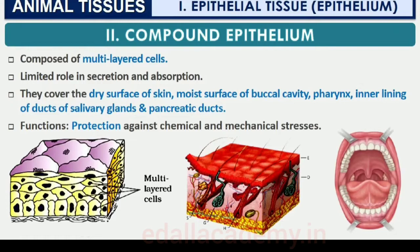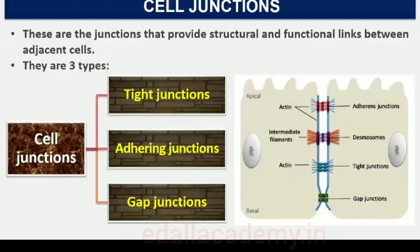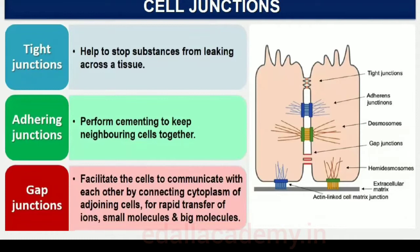All cells in epithelium are held together with little intercellular material. In nearly all animal tissues, specialized junctions provide both structural and functional links between individual cells. Three types of cell junctions are found in the epithelium and other tissues: tight, adhering, and gap junctions. Tight junctions help to stop substances from leaking across a tissue. Adhering junctions perform cementing to keep neighboring cells together. Gap junctions facilitate cells to communicate with each other by connecting the cytoplasm of adjoining cells for rapid transfer of ions, small molecules and sometimes big molecules.